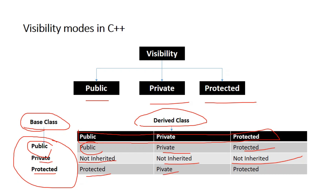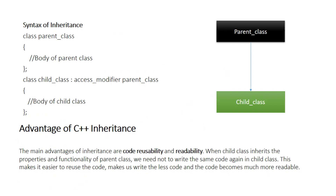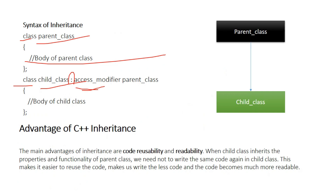These are the three concepts of visibility modes. The syntax of inheritance: we define a parent class with its body, then define a child class followed by an access modifier — public, private, or protected — and then the parent class name. The child class inherits the properties of the parent class.